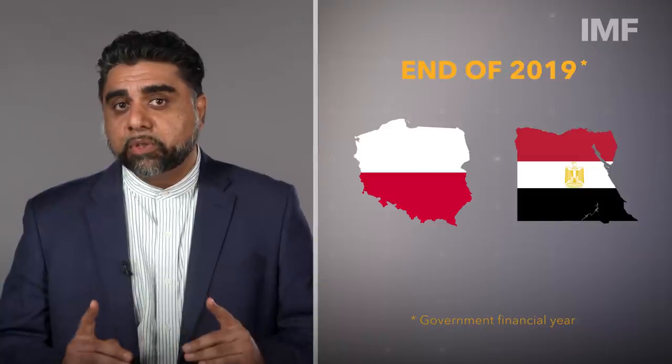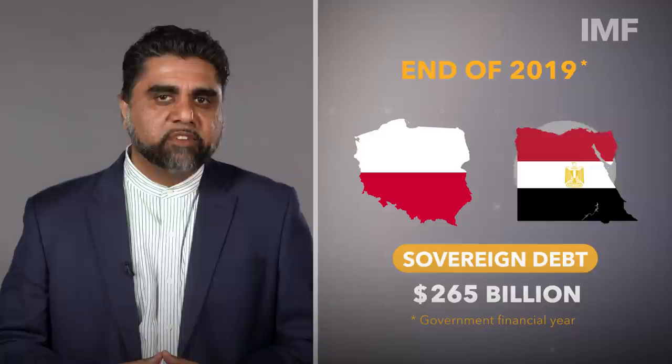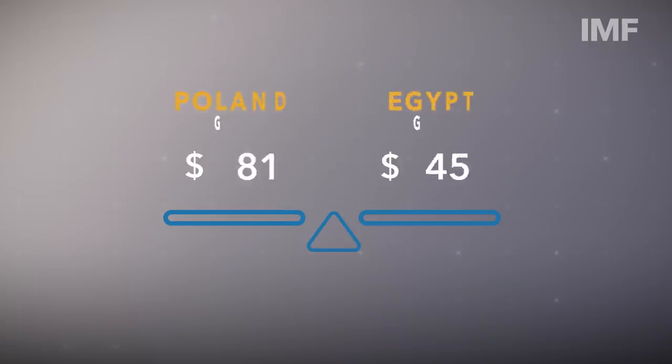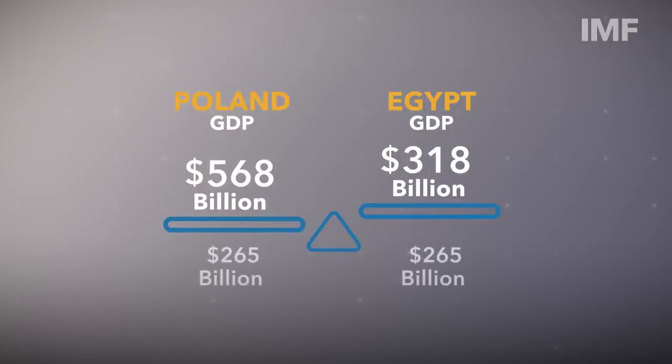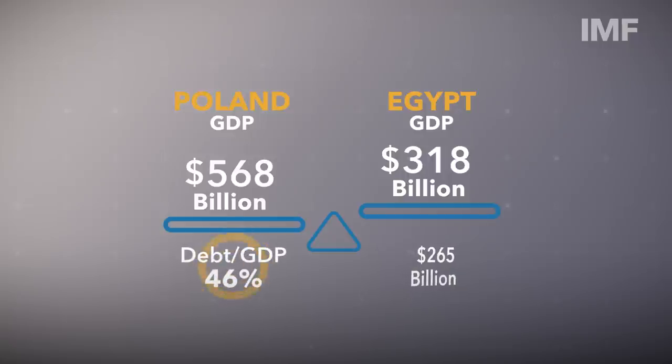But just looking at sovereign debt as a sum total in nominal or dollar terms doesn't really give us the whole picture. Let's take a look at two emerging markets to show you what I mean: Poland and Egypt. By the end of 2019, both had sovereign debt of around $265 billion. At first glance, it seems both countries have the same debt burden. But look closer — Poland's economy is about 80% bigger than Egypt's. Thus, that same $265 billion is a much smaller percentage of Poland's economy than it is for Egypt's.